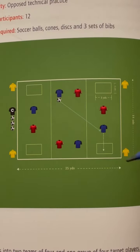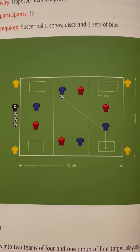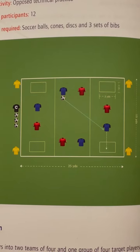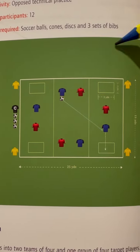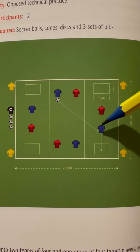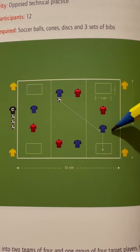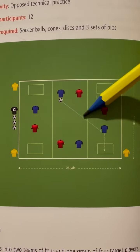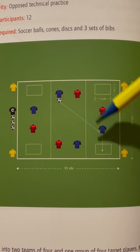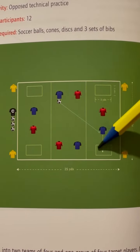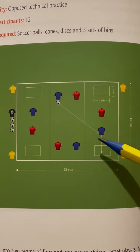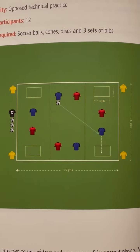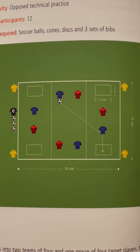Initially players must play only within their zones. They can pass between zones but they can't move between zones. The idea of the activity is to score points by receiving a pass or by dribbling into one of the score boxes. For example, if this blue player makes a run in and receives a pass there, and if a player scores they can immediately attack the other end to score a point at the other end, because play is in both directions.